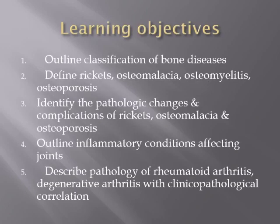Our learning objectives are to outline the classification of bone diseases. We're going to learn how to classify any disease of any organ and make a scheme for this. We have to know the definition of rickets, osteomalacia, osteomyelitis, and osteoporosis, and understand the difference between those four definitions.